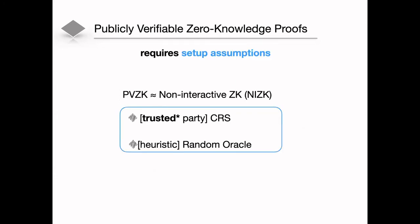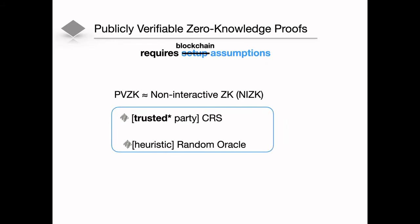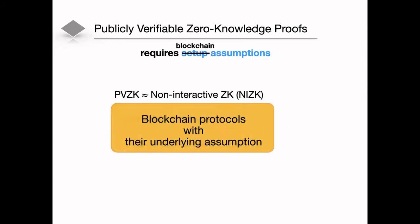Examples of this type of proof are non-interactive zero-knowledge proofs, which usually come with the cost of a setup assumption or a heuristic assumption. So what we ask in this talk is whether we can replace this setup assumption with something already running in the world, like a blockchain. In more detail, we are asking: can we use the blockchain and the assumptions we make on the blockchain to construct a cryptographic protocol on top of it, and in particular, a publicly verifiable zero-knowledge protocol?